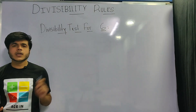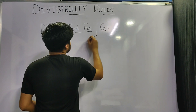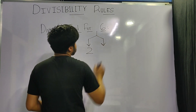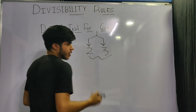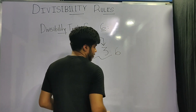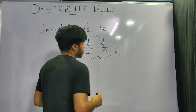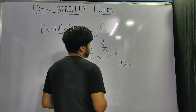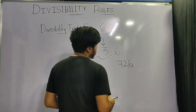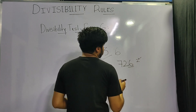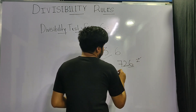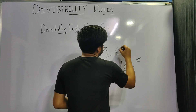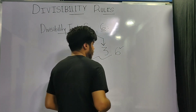Checking for the number 6 is a two-step process. First, we check whether the number is divisible by 2, and then we check whether it is divisible by 3. If both conditions are satisfied, the number is divisible by 6. For example, take 726: its last digit is even, so it's divisible by 2. Its digit sum is 15, which is a multiple of 3, so the number is divisible by 6.